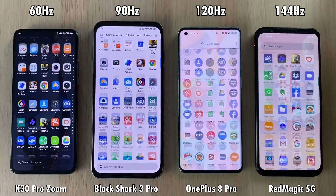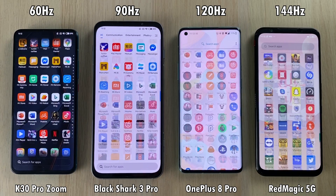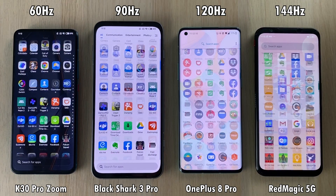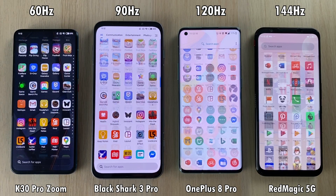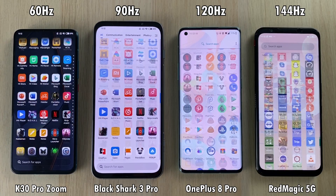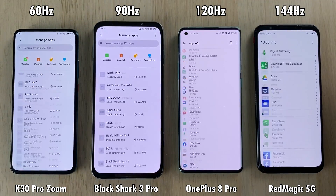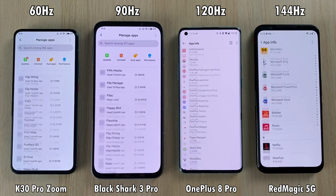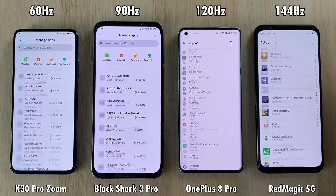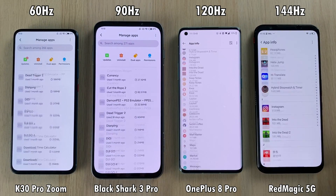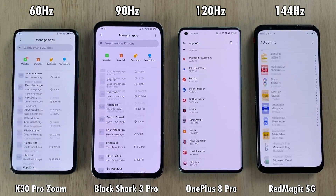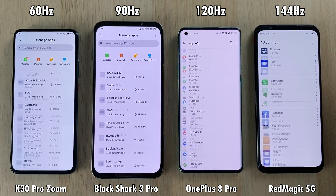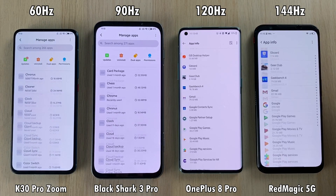Now we've slowed down by 75%, so you're seeing 25% of the footage. Scrolling through apps, you can't see too much of a difference, but you see a lot more on screen on the 144Hz and 120Hz panels as opposed to the others. Going into the settings menu to manage apps and check app information, once we slow it down, you can see so many more frames with the high refresh panels on the right-hand side as opposed to the 90 and 60Hz on the left-hand side.